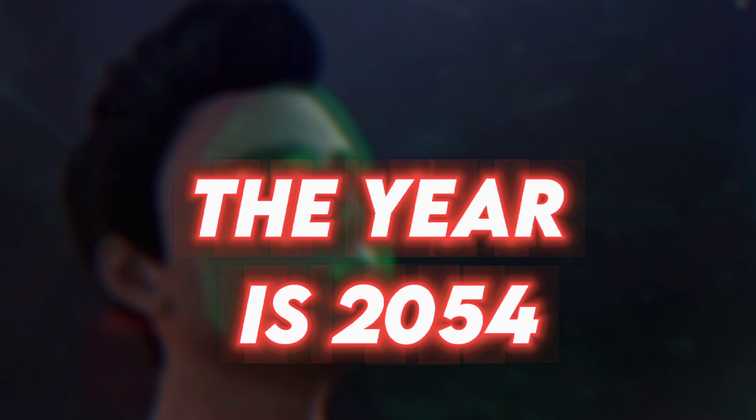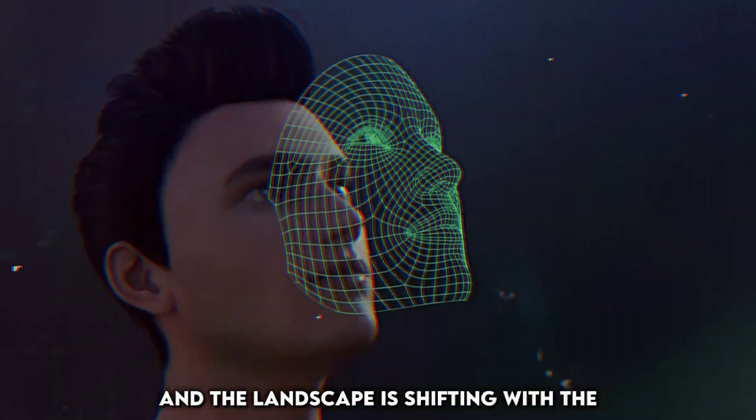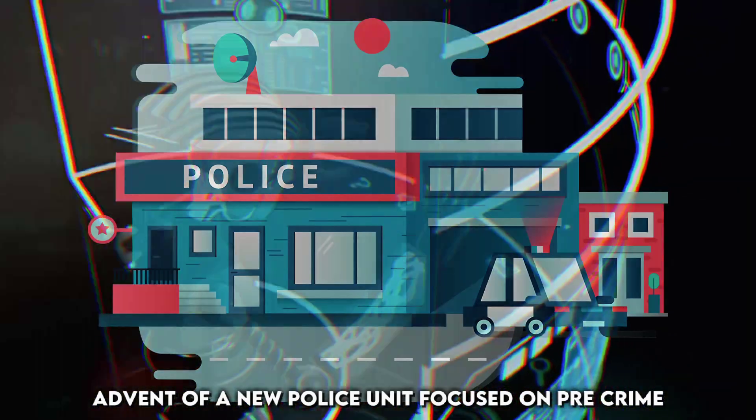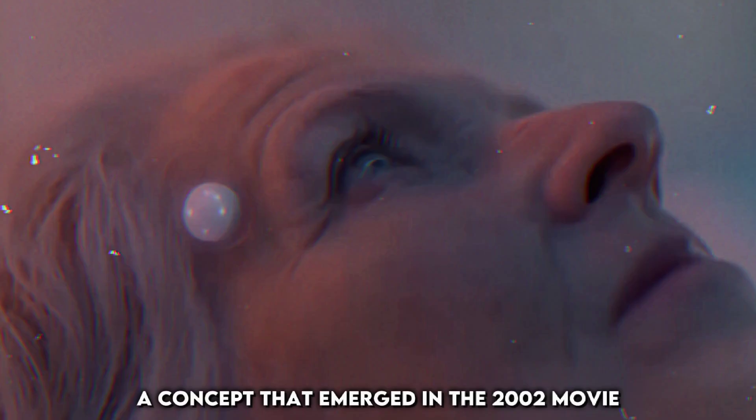The year is 2054 and the landscape is shifting with the advent of a new police unit focused on pre-crime, a concept that emerged in the 2002 movie Minority Report.